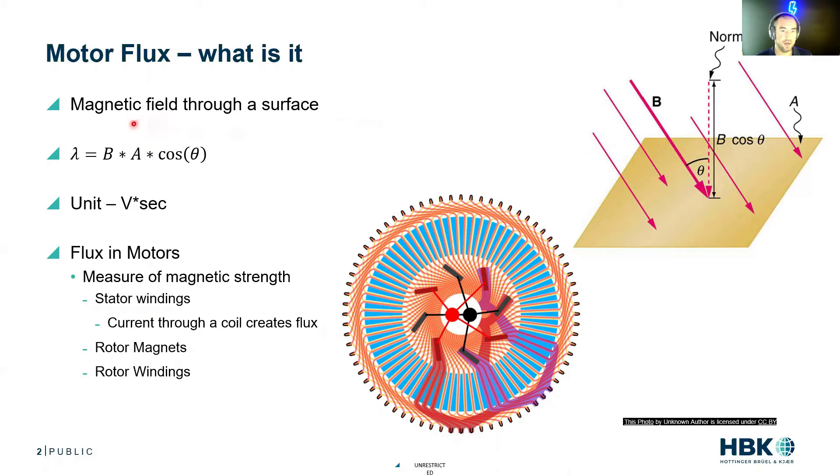Flux is a magnetic field through a surface. Magnetic field is that force that sticks a magnet to your refrigerator. We can think of the field as having these field lines, which are indicated by these pink arrows.